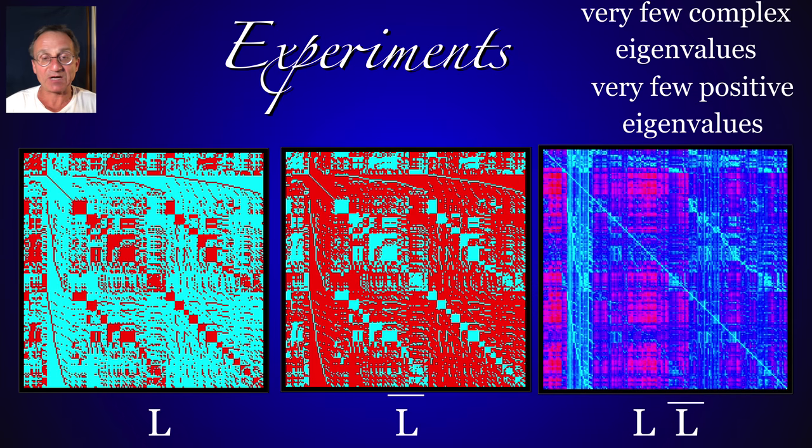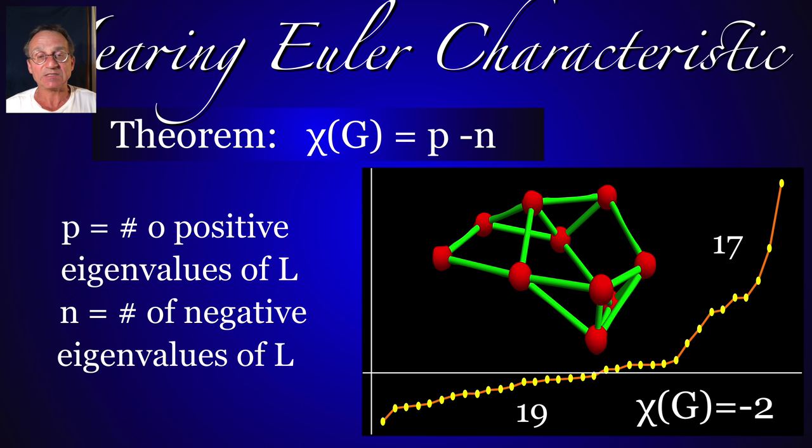I don't know what is actually going to happen. The matrix L bar, for example, has always just two or three positive eigenvalues, although the other eigenvalues are negative. I don't understand this yet.